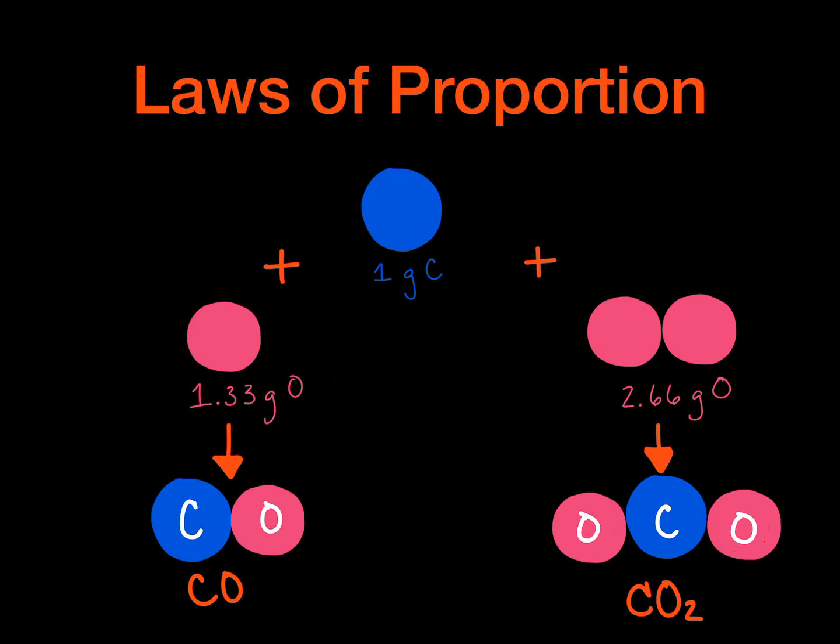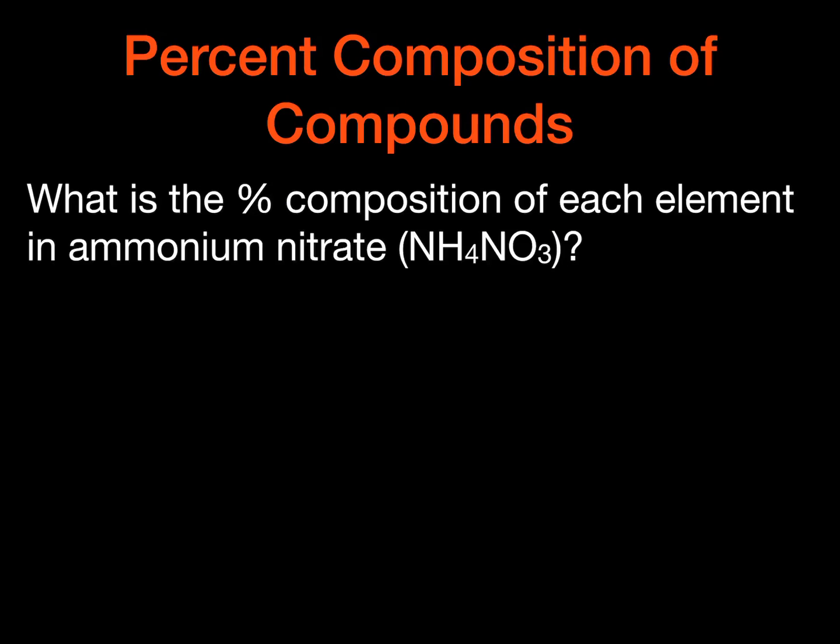And then if we see that there are different proportions between them, CO versus CO2, they have the same elements, but they're in different proportions. So they're different compounds because carbon monoxide and carbon dioxide are not the same thing.